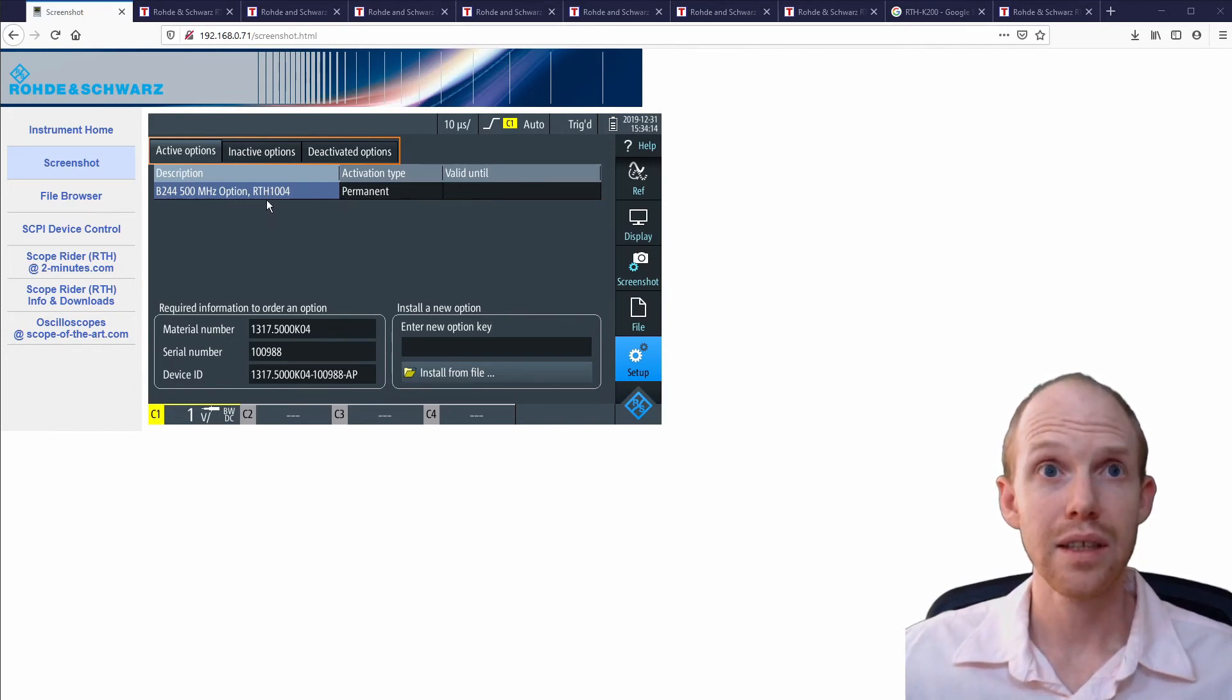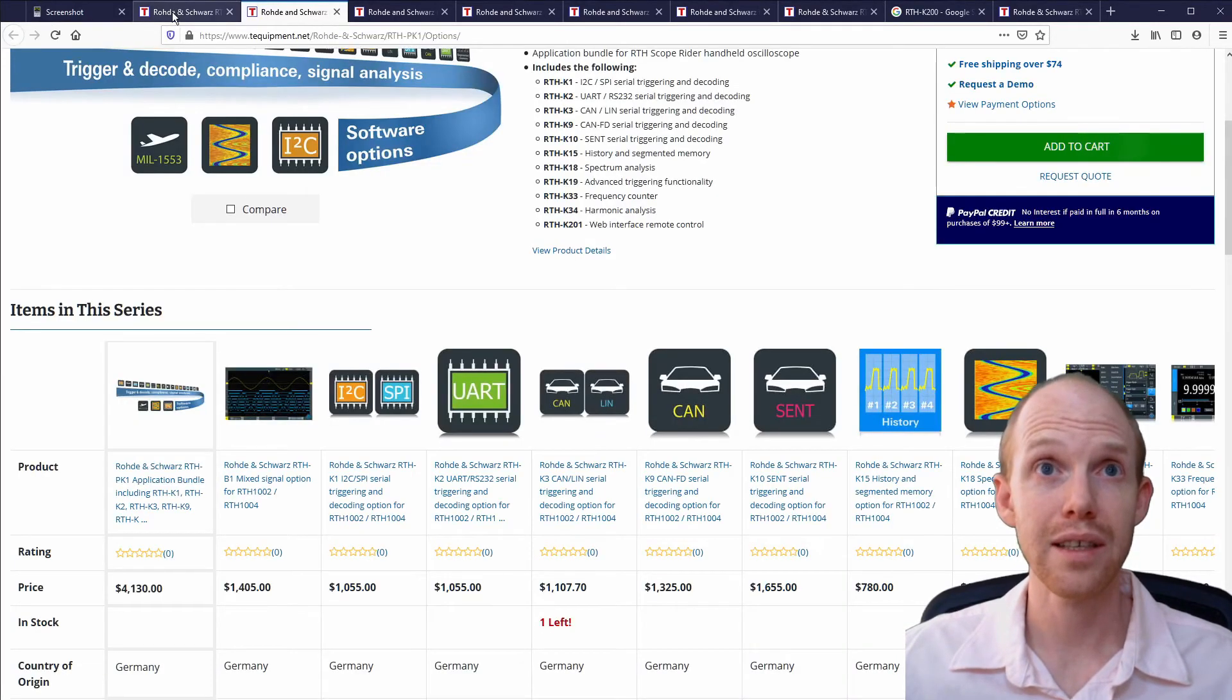But it looks like one of the things that I was kind of excited about was the web interface where you had a live view of the scope, and you could press the buttons on here, and it would change the actual scope and make it kind of cool, especially for screen sharing on the YouTubes. But it turns out that is an extra option. Here is a list of a whole bunch of their options, and you can see they're all pretty expensive.